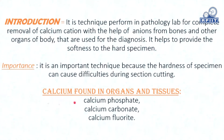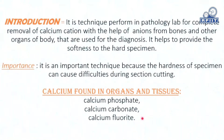Next is the calcium found in organs and tissue. There are three types of calcium found in bones and teeth: first is calcium phosphate, second is calcium carbonate, and third is calcium fluoride. These three types of calcium are present inside bones and teeth in the body.